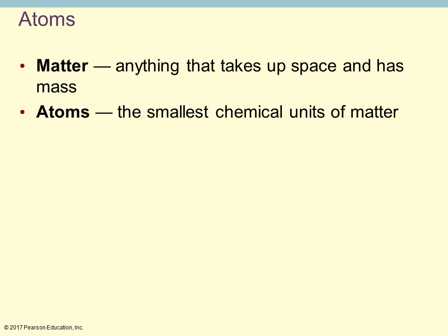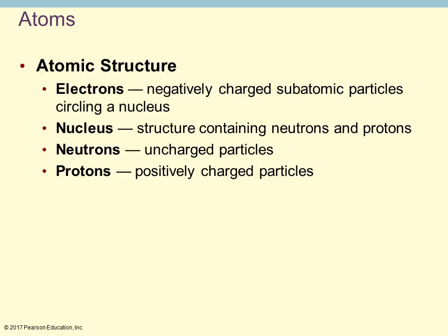If we start off first talking about atoms, that's the smallest chemical unit of matter. Matter is anything that takes up space and has mass. When we look at the structure of atoms, there are different components. The ones we are going to look at are the electrons, the neutrons, and the protons.